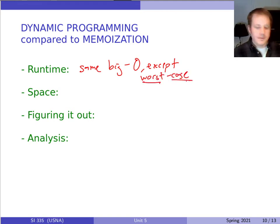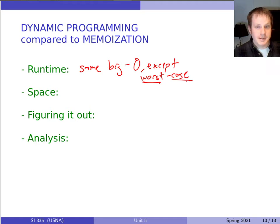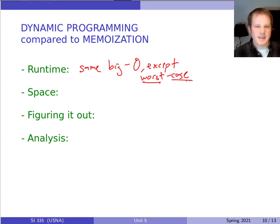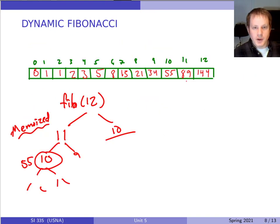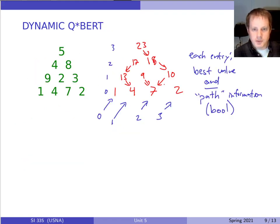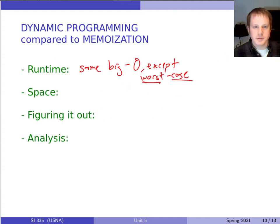One of the disadvantages of memoization is that it usually depends on hashing, and things can go wrong — you can get an unlucky hash table, collisions, separate chaining. So we can never really get a good worst-case running time when we're using hashing. But now with dynamic programming we can. For Fibonacci, we don't have to worry about any hash functions because we're just building up the array directly. Same for the Qbert problem — we're just building up the array directly and there's no problem with collisions.